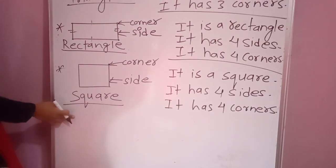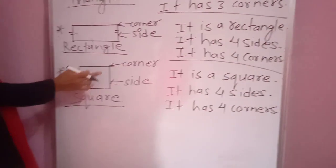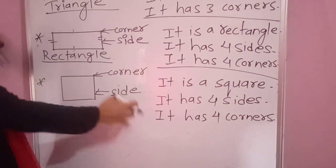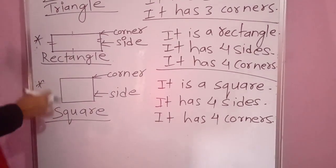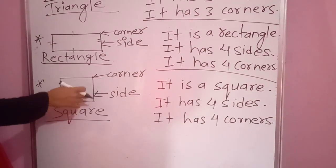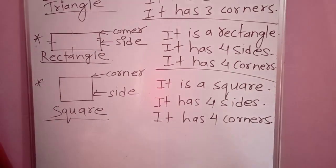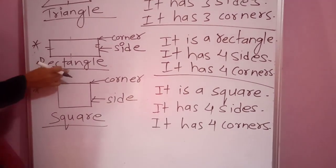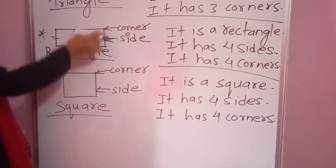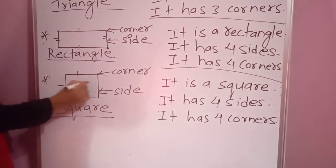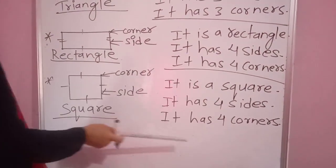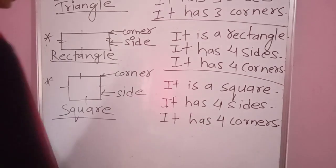Listen carefully. In the case of a square, it seems similar to a rectangle. It also has four sides and four corners. But there is some difference between the square and a rectangle. In the case of a square, all sides are equal. But in the case of a rectangle, its opposite sides are equal — not all sides. So, in case of square, all sides are equal. It has four sides and four corners.